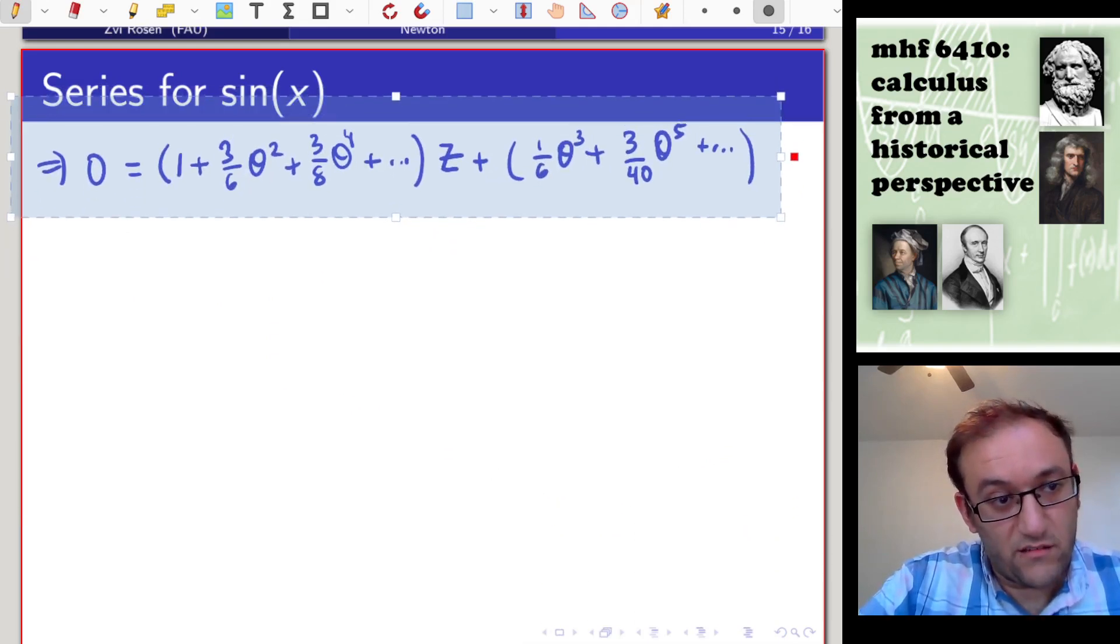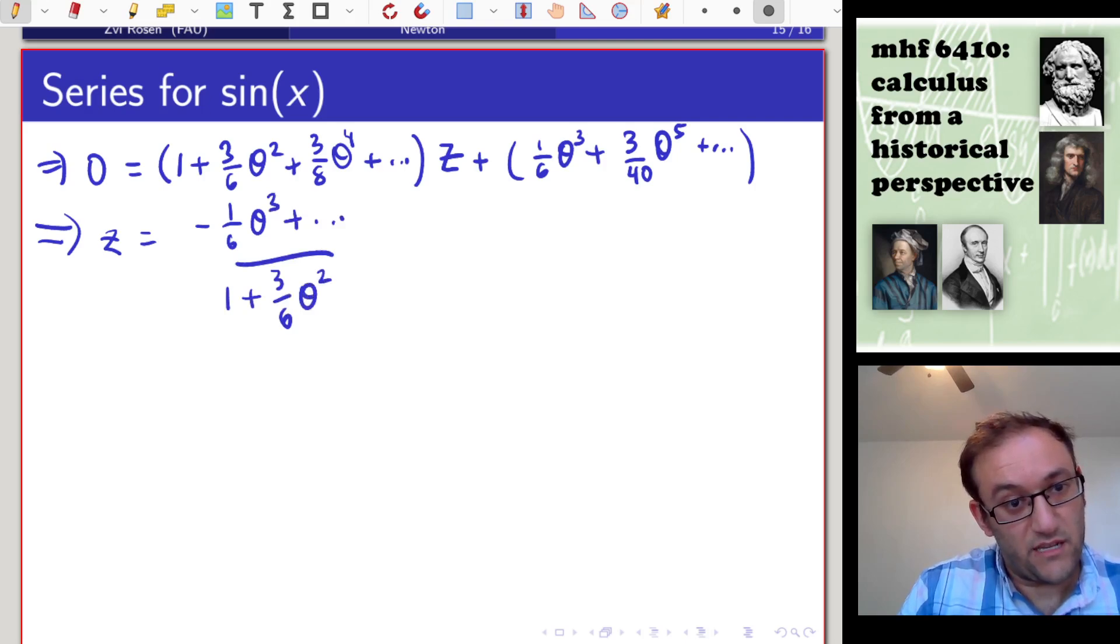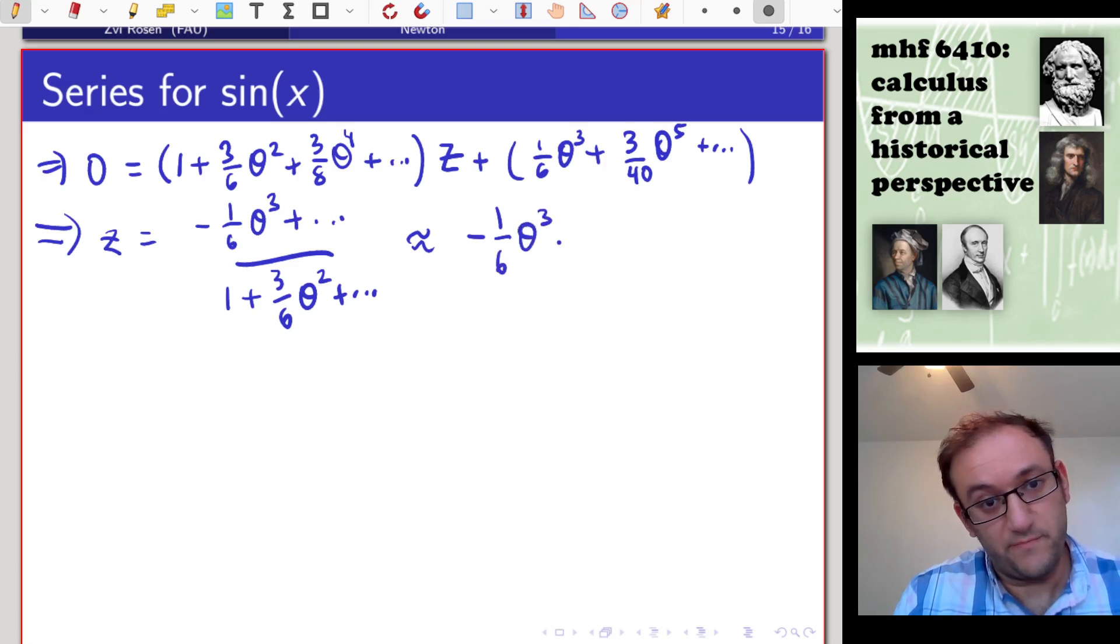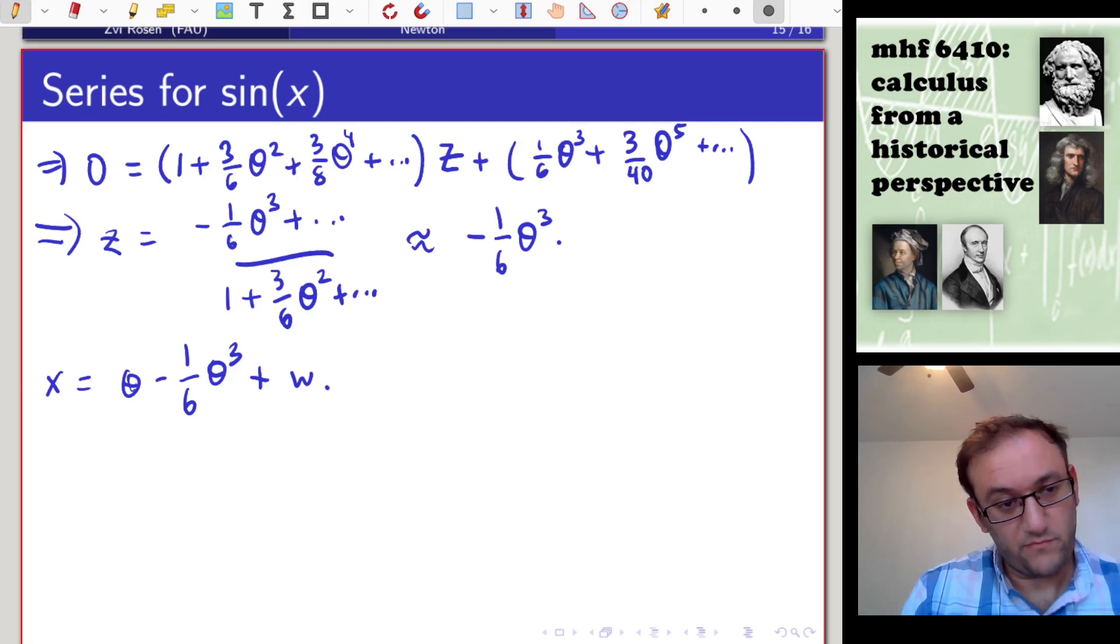Subtracting theta from both sides, we get 0 equals 1 plus 3 sixths theta squared plus 3 eighths theta to the fourth, and higher order stuff, times z, plus 1 sixths theta cubed plus 3 40ths theta to the fifth and higher order stuff. Solving for z in this equation, we get that z is minus 1 sixths theta cubed.